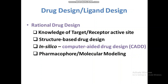First of all, what is drug design? It is also called ligand design, and it is also known as rational drug design, which is based on knowledge of the target receptor active site. Based on that active site we design our compounds, our drugs, our ligands that are going to hit that target. It is also known as structure-based drug design. When we use computers, different website servers, or different softwares for the designing of our ligand or drug, it is called computer-aided drug design, also known as CADD or molecular modeling.